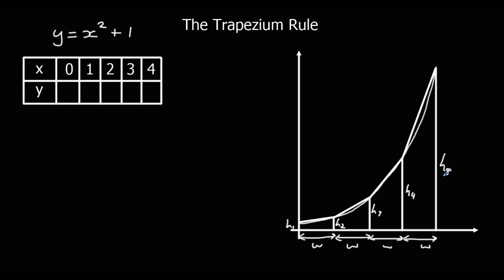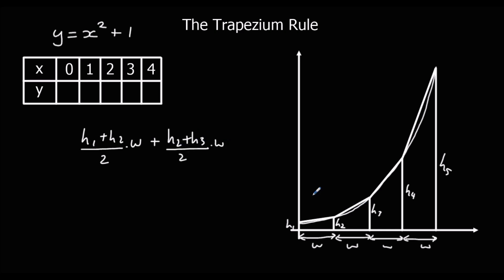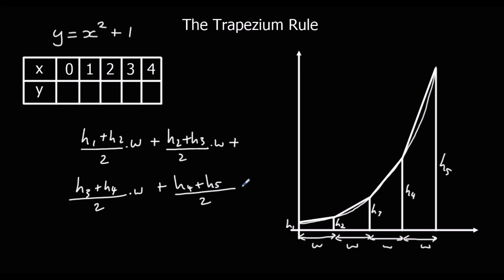To work out the area of each trapezium, we take the average of the two parallel sides — half their sum. So we do (h1 + h2)/2 times the width. Then we do that for each trapezium: (h2 + h3)/2 times the width for the second, (h3 + h4)/2 times the width for the third, and (h4 + h5)/2 times the width for the last one.